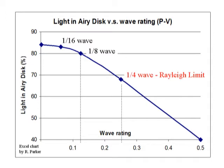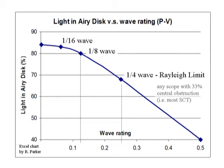At the Rayleigh limit of a quarter wave, keep in mind that every Schmidt-Cassegrain telescope has a central obstruction of about 33 percent, making it a quarter-wave system at best — even with absolutely perfect optics. And yet the fantastic photos of Saturn, Jupiter, and Mars seen in Sky & Telescope and all over the web were taken with Schmidt-Cassegrain telescopes. So a quarter wave really does give you a very good telescope.